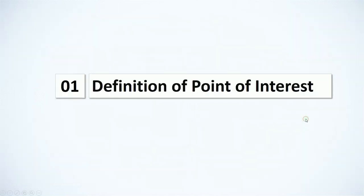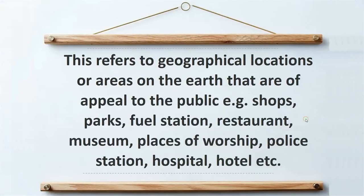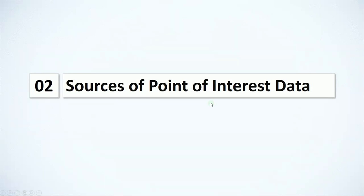Let's start with number one: the definition of Point of Interest. Points of Interest generally refer to geographical locations or areas on Earth that have appeal or are of interest to the public. This includes shops, parks, petrol stations, restaurants, museums, places of worship, police stations, hospitals, hotels, stadiums, and the like — the list goes on and on.